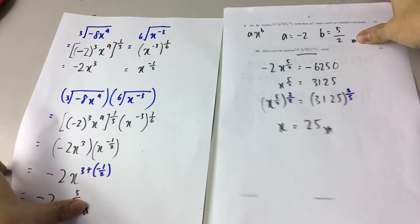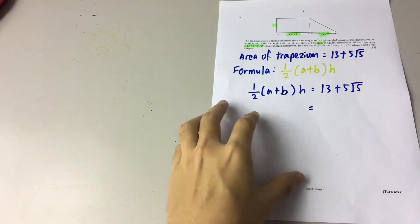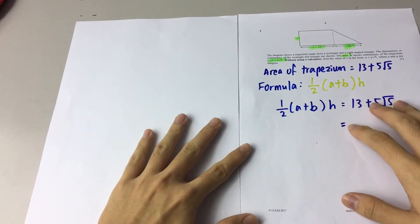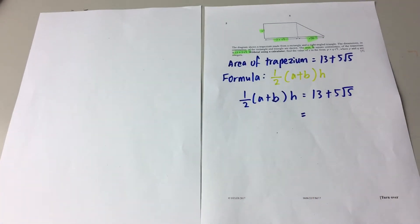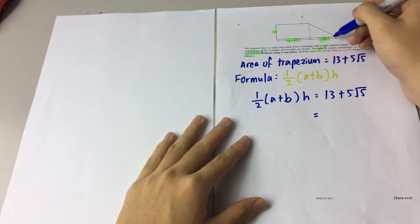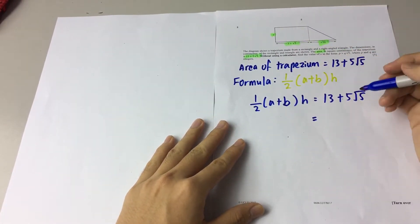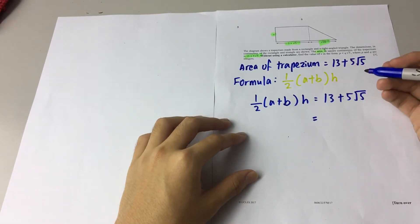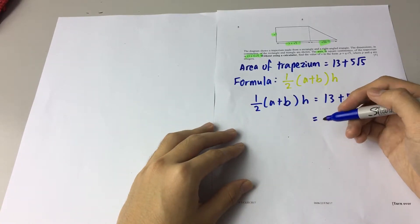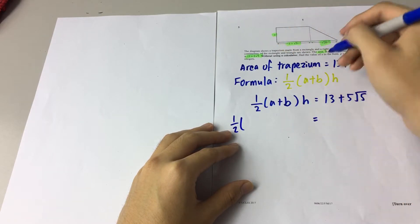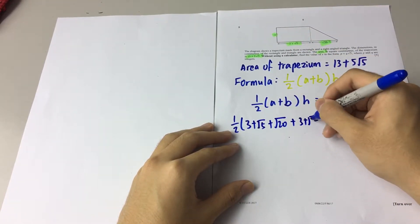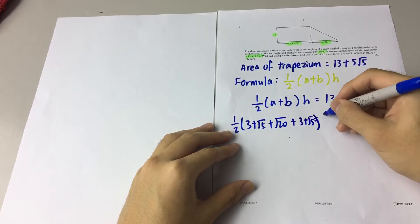Now the final question for today — we look at the trapezium. As we know, the trapezium has the formula of one half times (a plus b) times the height. So a is here, b is here (or you can switch them, it's the same). We just need to plug in the formula. The area is 13 plus 5 root 5. We sub in 1 over 2, where a is the whole expression: 3 plus root 5 plus root 20, on top, plus 3 plus root 5. Then we close the bracket and times the height x.